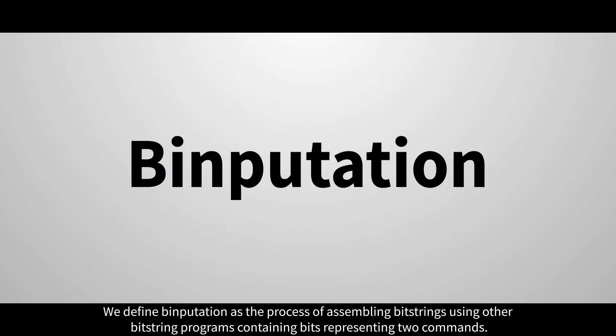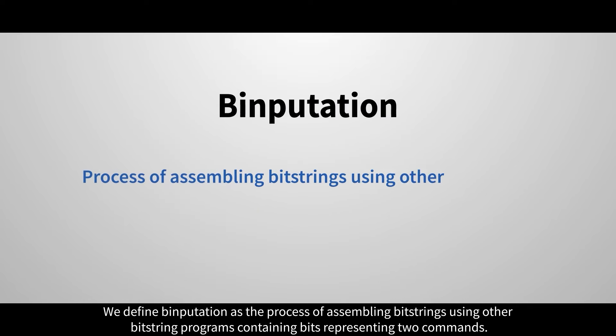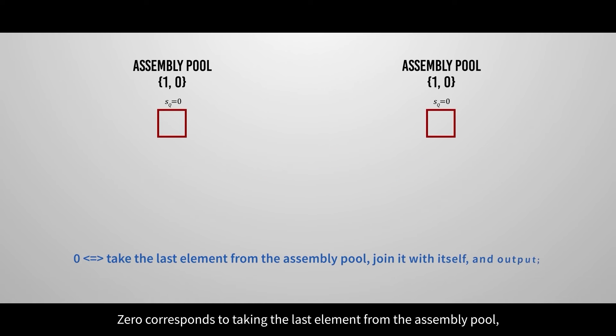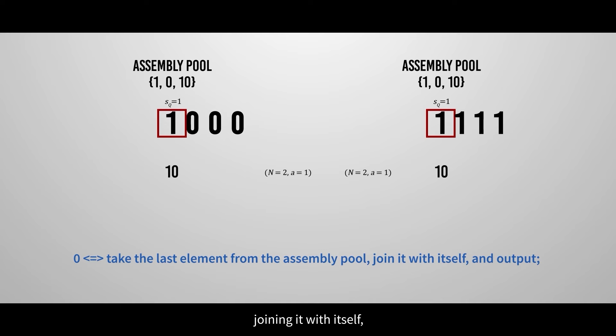We define binputation as the process of assembling bitstrings using other bitstring programs containing bits representing two commands. 0 corresponds to taking the last element from the assembly pool, joining it with itself, and outputting it.